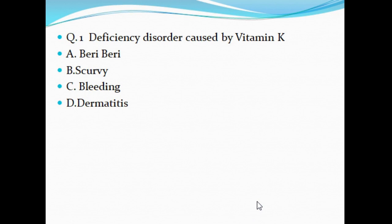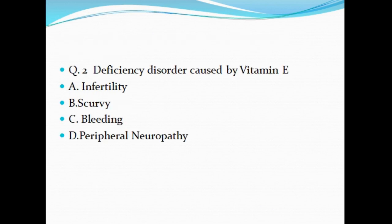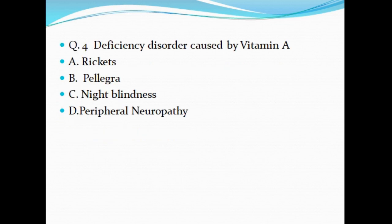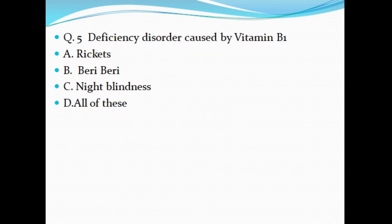Now it's time for the question round on deficiency disorders of vitamins. Question 1: Deficiency disorder caused by Vitamin K — A. Beriberi, B. Scurvy, C. Bleeding, D. Dermatitis. Question 2: Deficiency disorder caused by Vitamin E — A. Infertility, B. Scurvy, C. Bleeding, D. Peripheral neuropathy. Question 3: Deficiency disorder caused by Vitamin D — A. Rickets, B. Pellagra, C. Bleeding, D. Peripheral neuropathy. Question 4: Deficiency disorder caused by Vitamin A — A. Rickets, B. Pellagra, C. Night blindness, D. Peripheral neuropathy. Question 5: Deficiency disorder caused by Vitamin B1 — A. Rickets, B. Beriberi, C. Night blindness, D. All of these.